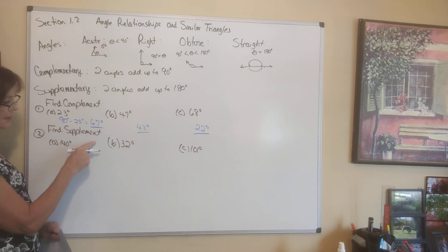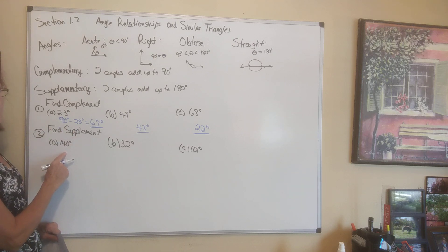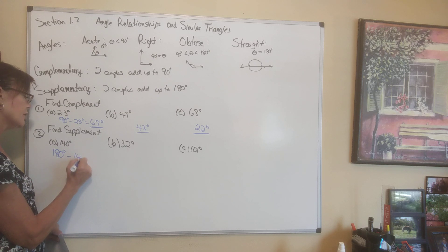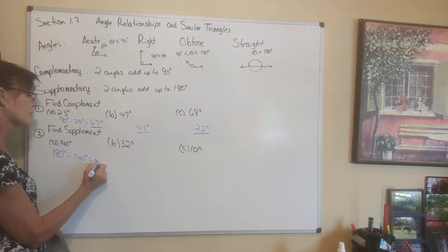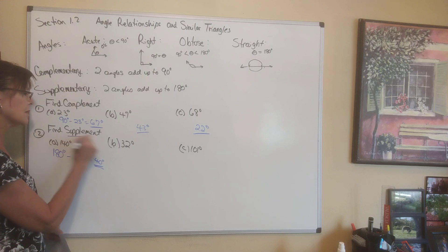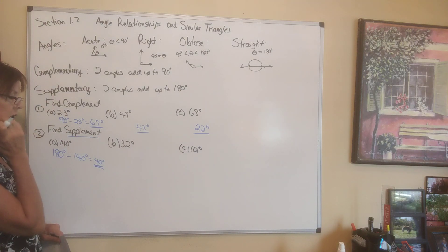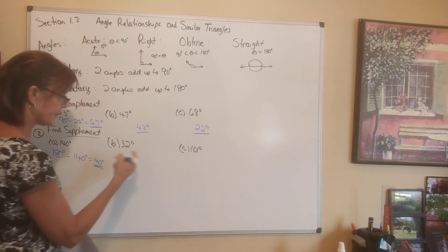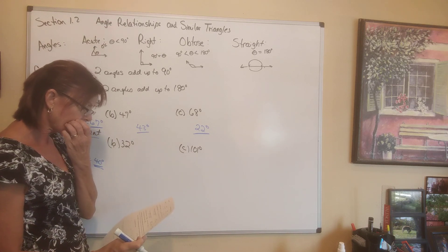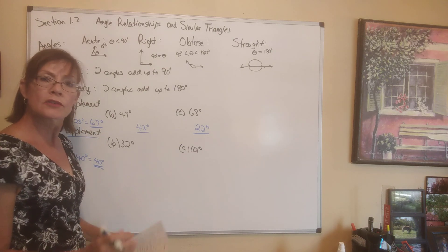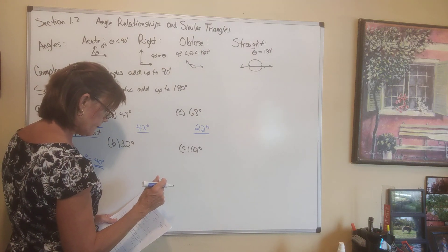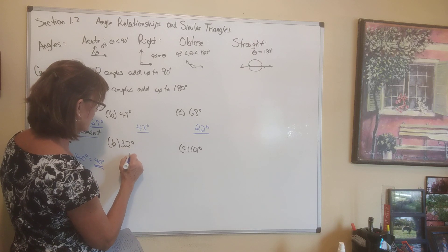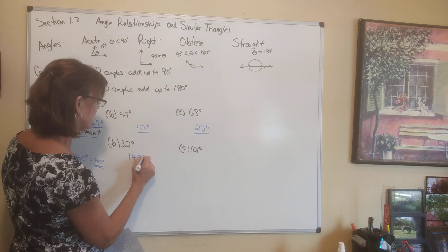What is the supplement? To find the supplement, we subtract this angle from 180. So 180 minus 140 would be 40 degrees — this is the supplement of that angle. The supplement of 32 degrees: we take 180 minus 32, and that gives us 148 degrees.